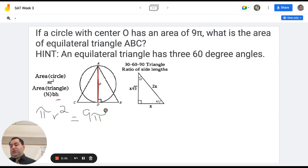From here, what I can do is I can cancel a π out on each side and I get r² equals 9. If I take the square root of each side, I can get the radius equal to 3. So now looking back at the diagram, I can see that if the radius is 3, the height of the triangle is going to be 6.